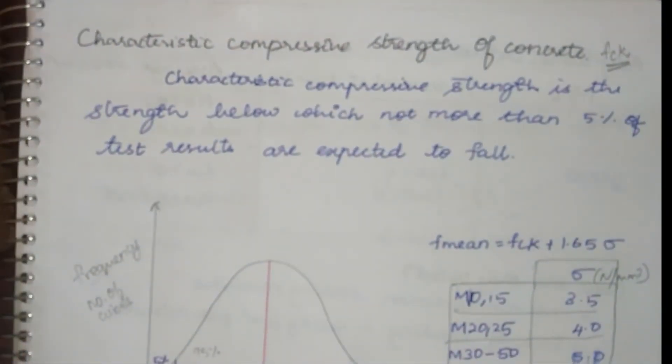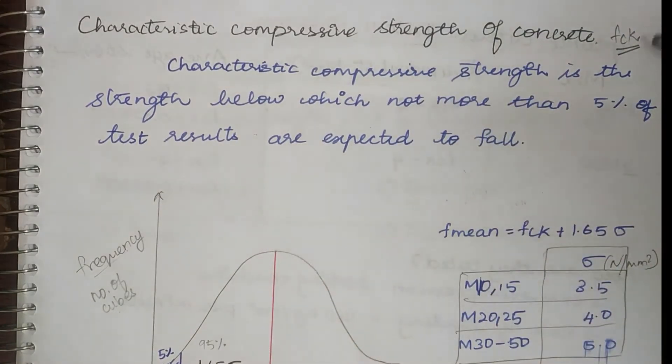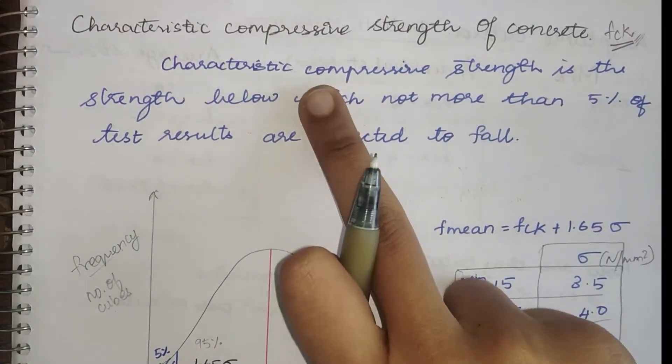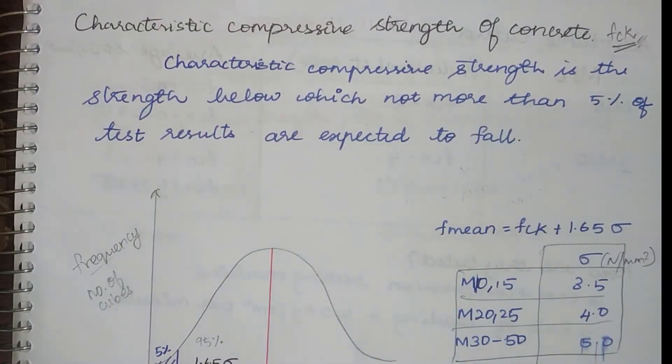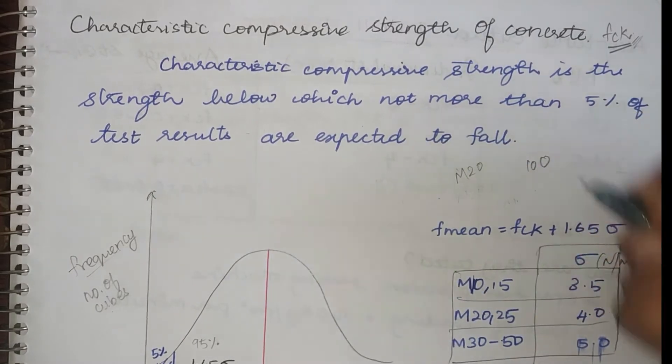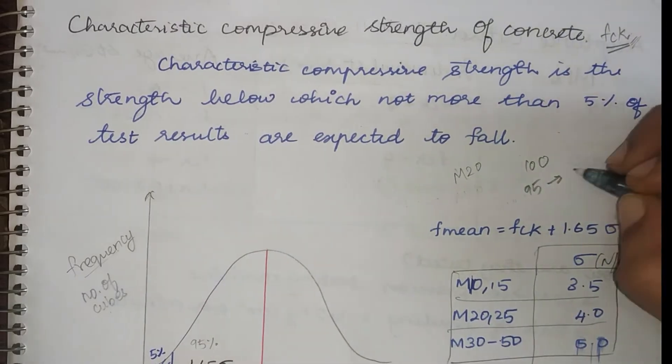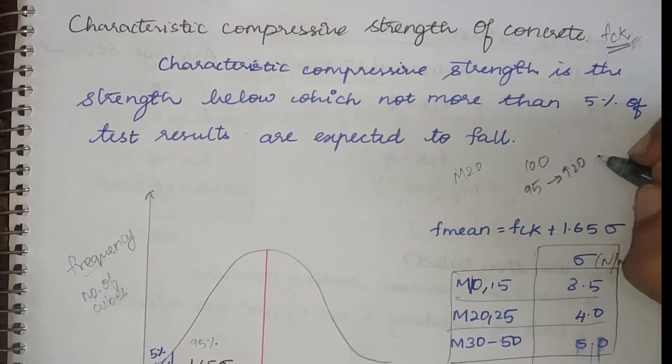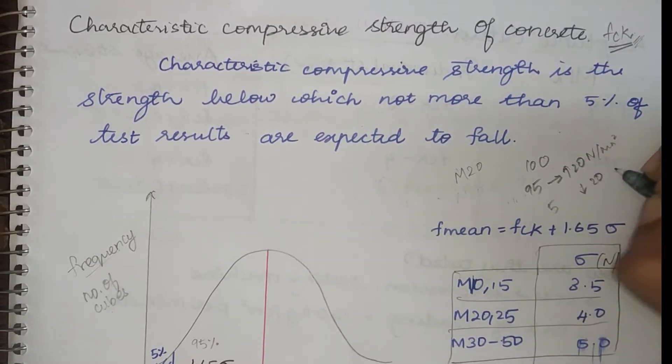Next is an important topic when it comes to GATE, a very important yet fun topic: characteristic compressive strength of concrete, which is called as fck by code. This means it is the strength below which not more than 5 percentage of the test results are expected to fall. Which means that say I'm going to cast M20 grade of concrete and I'm going to cast hundred cubes. By this definition it means that 95 cubes should have a strength greater than 20 Newton per mm square, and 5 percentage are allowed to fall below 20.